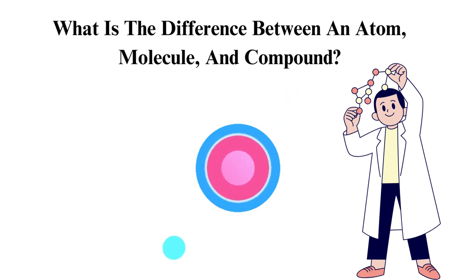However, atoms have subatomic particles within them, like protons, electrons, or neutrons. Atoms combine to form molecules and compounds. Examples of atoms are hydrogen, oxygen, and chlorine.